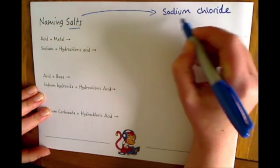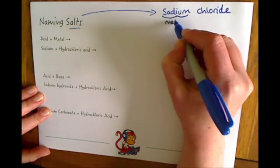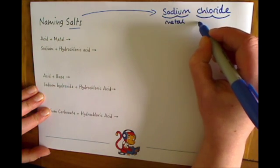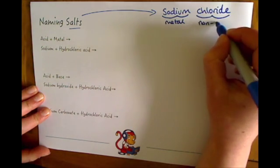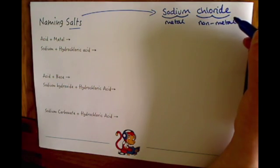And all salts have two words. The first word comes from a metal and the second word comes from a non-metal whereby chloride is the ion for chlorine.